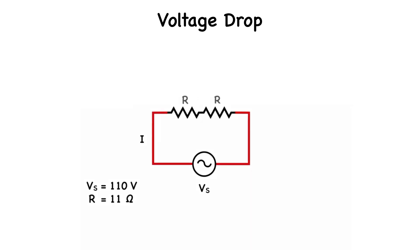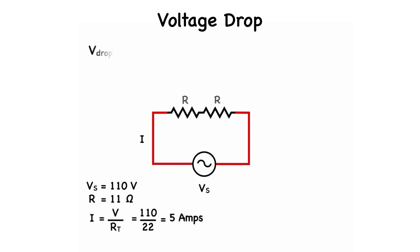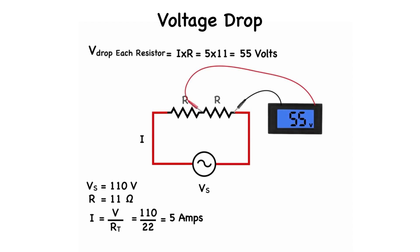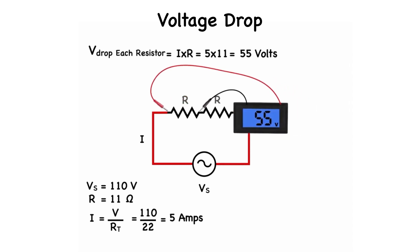Looking at the same components but this time with two 11 ohm resistors in series, we still have a voltage supply of 110 volts AC. Ohm's law tells us that the current will be 5 amps, and the voltage drop across each resistor will be 5 amps multiplied by 11 ohms, for 55 volts.